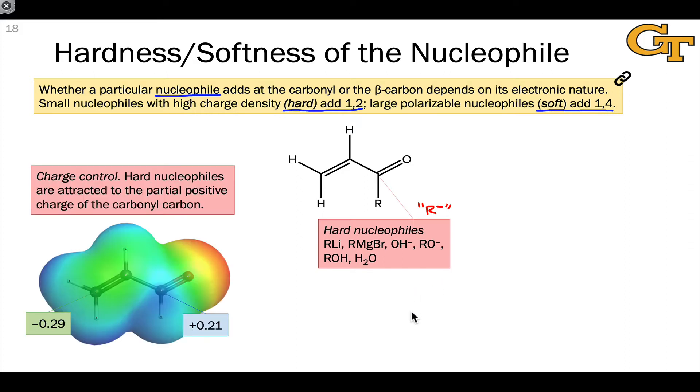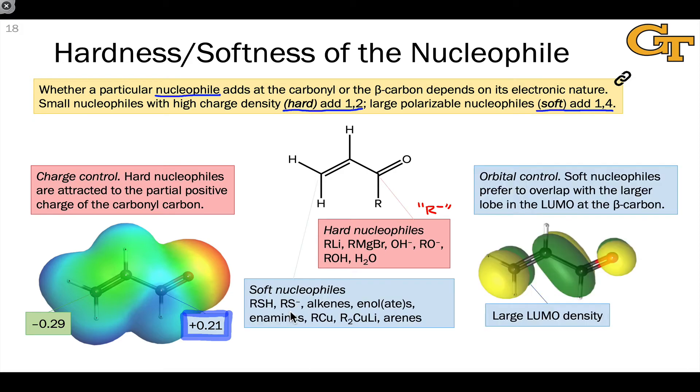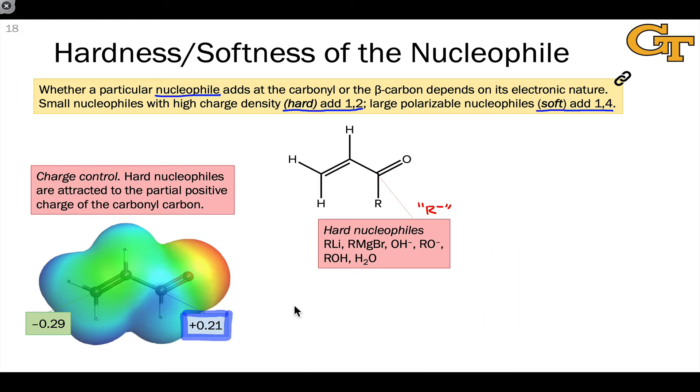Hard nucleophiles, because of their high charge density, are driven by what we might call charge control. The nucleophile is attracted through electrostatic forces to the atom that bears the greatest partial positive charge. And in unsaturated carbonyl compounds, by and large, that is the carbonyl carbon. So in the example we see here, the carbonyl carbon has much more partial positive charge than the beta carbon, and in fact, the partial charge on the beta carbon is actually negative. So hard nucleophiles will tend to be attracted to that partially positive carbonyl carbon and add in a direct fashion in an irreversible manner to give the 1,2 addition product.